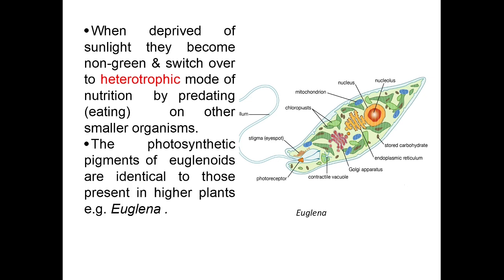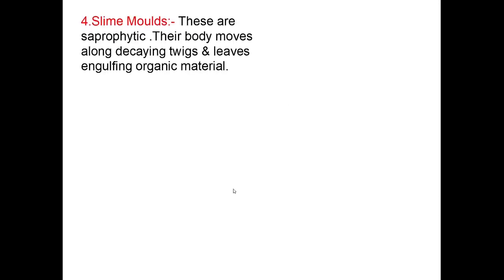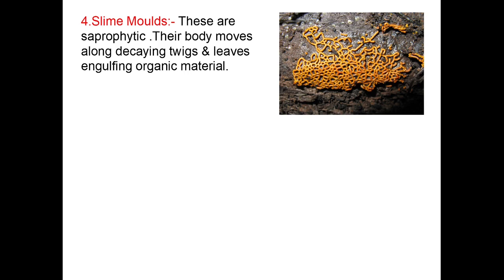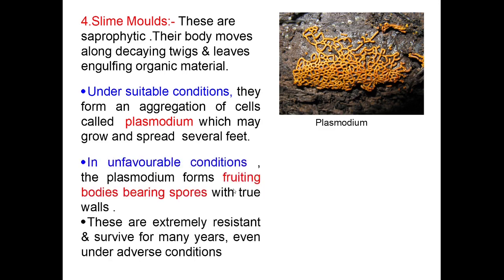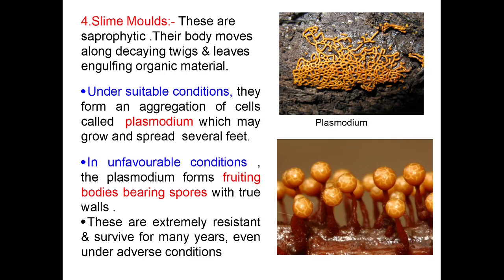The photosynthetic pigments of Euglenoids are identical to those present in higher plants, for example, Euglena. Slime molds are saprophytic; their body moves along decaying twigs and leaves, engulfing organic material. Under suitable conditions, they form an aggregation of cells called plasmodium, which may grow and spread over several feet. In favourable conditions, the plasmodium forms fruiting bodies bearing spores with two walls. These spores are extremely resistant and survive for many years, even under adverse conditions.